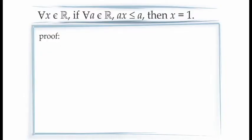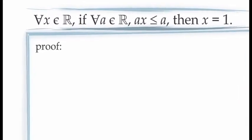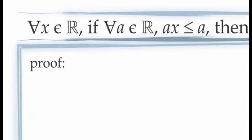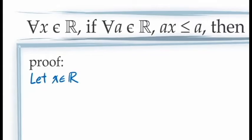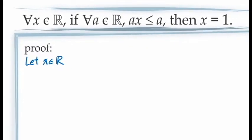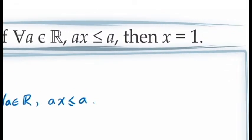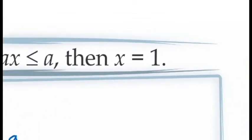To see how this works, let's look at an example. We're going to prove: for all values of x in the real numbers, if for all a in the real numbers, a times x is less than or equal to a, then x must be equal to 1. Since we're proving this for all real numbers x, we let x be an arbitrary real number. Since we're proving a conditional statement using a direct proof, we assume the antecedent: for all a in the real numbers, a times x is less than or equal to a. From this, we need to demonstrate that x equals 1.